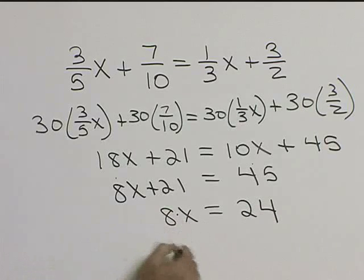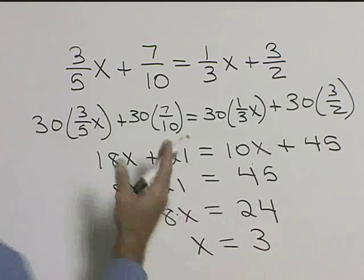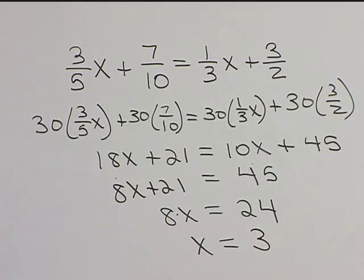And then to get rid of the 8, if you divide both sides by 8, you get x equals 3. So solving this equation, we get x equals 3.